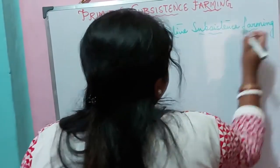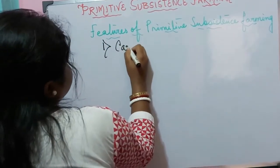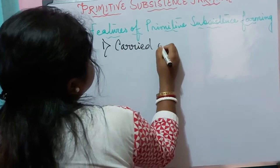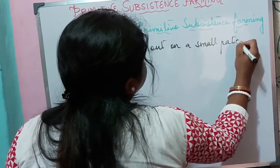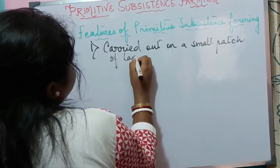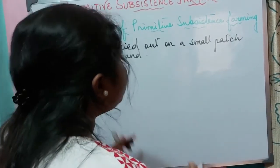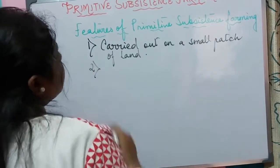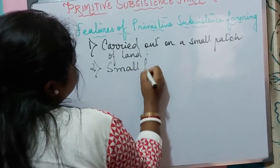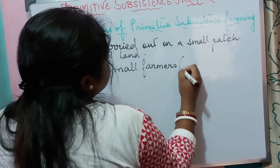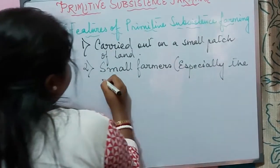The features of primitive subsistence farming are: first, this type of farming is mainly practiced on a small patch of land. The ones who mainly practice this type of farming are small farmers, especially the tribal people.